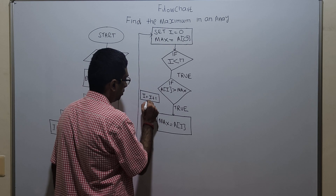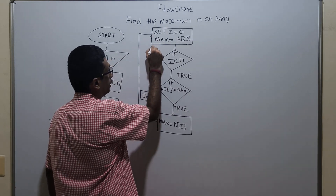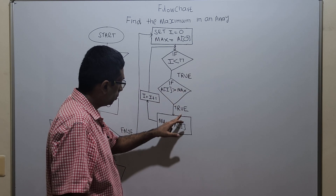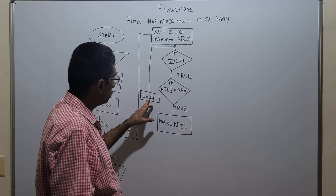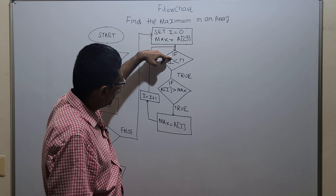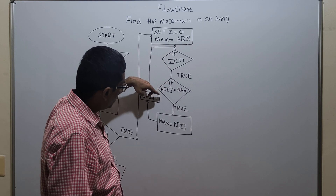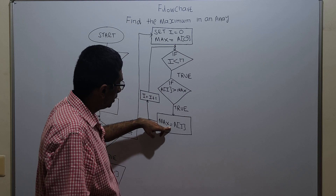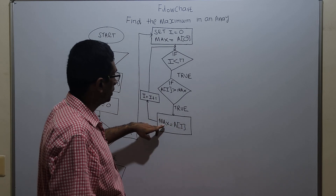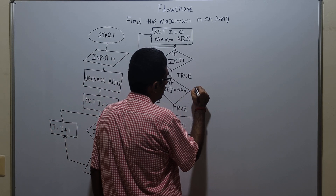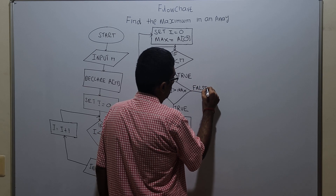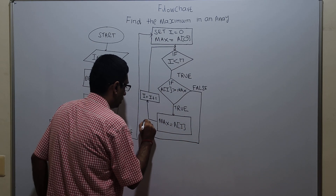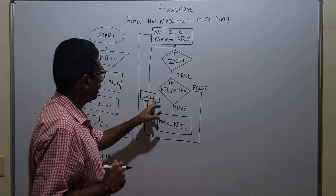I connect the increment back to the outer loop. It will check again i less than n, and then check if a of i is greater than max. If true, max equal to a of i. If a of i greater than max is false, I skip the assignment and go directly to incrementing i by 1, then connect back to the outer loop.